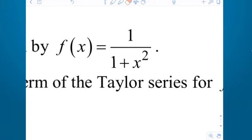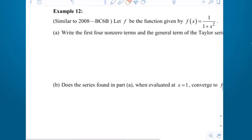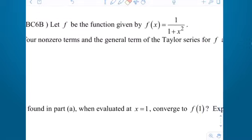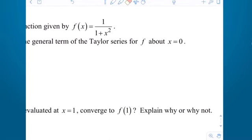Let f be the function given by f(x) = 1 over (1 + x²). Part A: write the first four non-zero terms and the general term of the Taylor series for f centered at zero. That's the Maclaurin series as well.